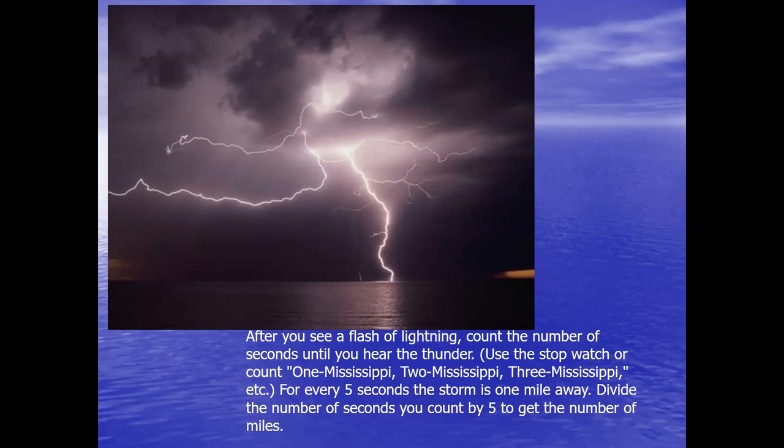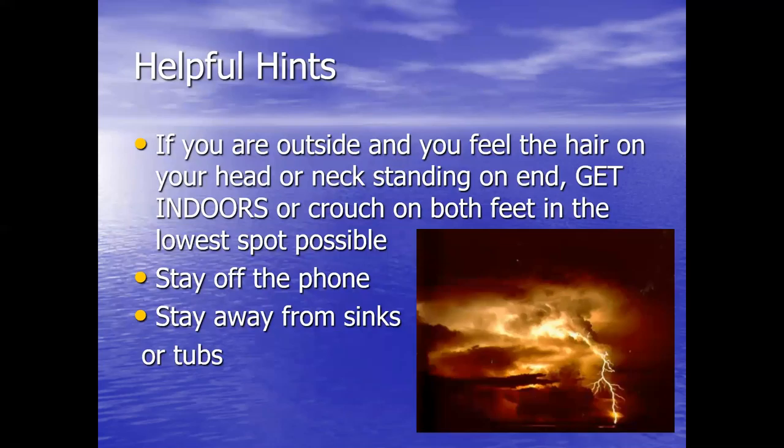If you want to know how far away lightning is from you, after you see a flash, count the number of seconds until you hear the thunder — you can say 'one Mississippi, two Mississippi, three Mississippi.' For every five seconds, the storm is one mile away. Divide the number of seconds by five to get the miles. If you count to 10, the lightning is two miles away — and that's way too close.